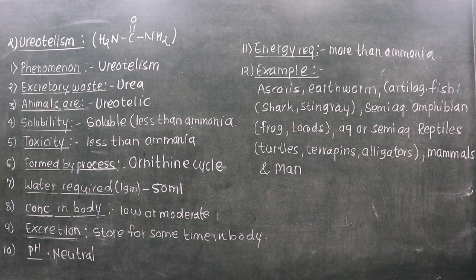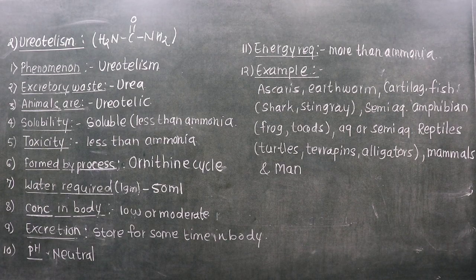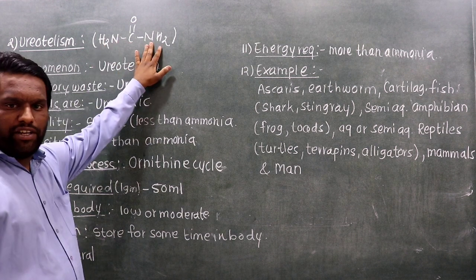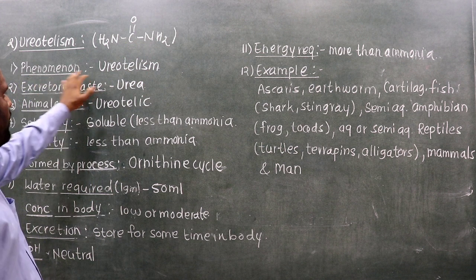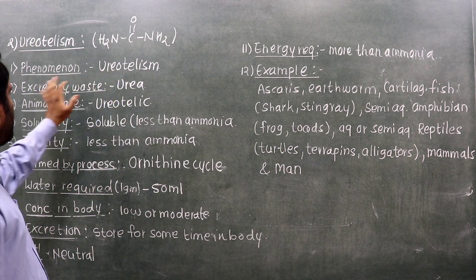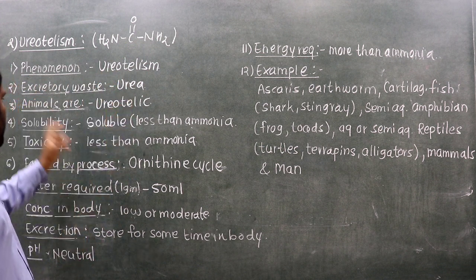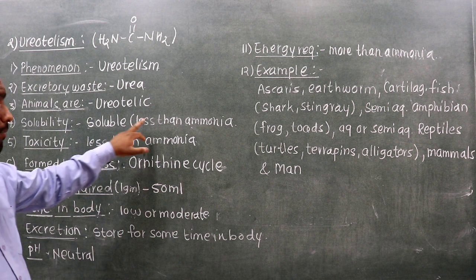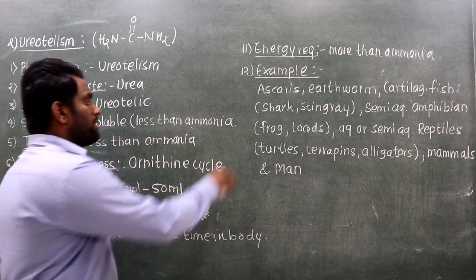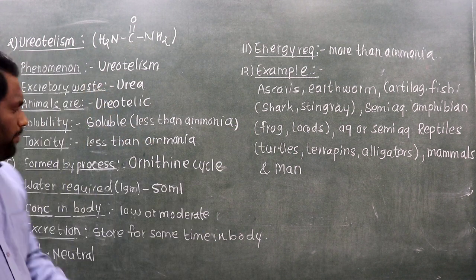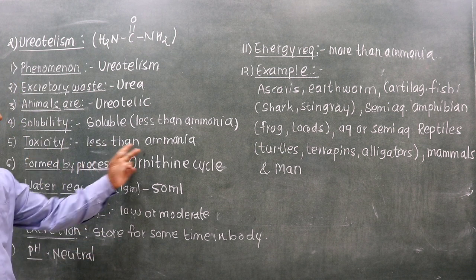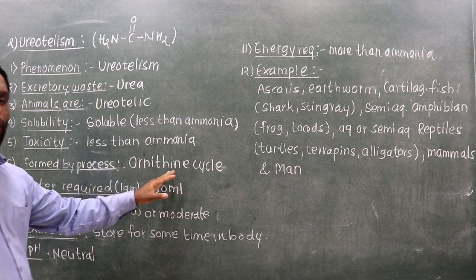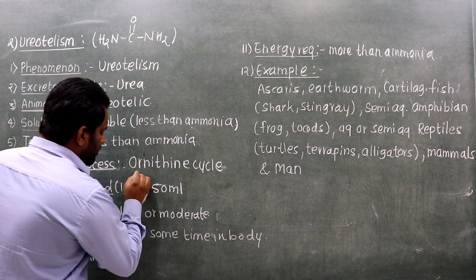The second mode of excretion is ureotelism. The formula for urea is CH4N2O (CO(NH2)2). The phenomenon is called ureotelism, and the excretory waste is urea. Animals that excrete urea are called ureotelic. Urea has less solubility than ammonia and is less toxic than ammonia. Urea is formed by the ornithine cycle.